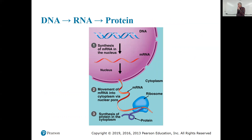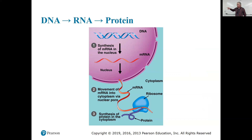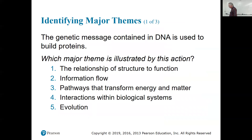This is the information superhighway in a cell: DNA to RNA to protein. Synthesis of mRNA in the nucleus is called transcription. The mRNA leaves the nucleus and moves into the cytoplasm via nuclear pores. Synthesis of protein in the cytoplasm at a ribosome is called translation. The genetic message contained in DNA is used to build proteins — this illustrates the major theme of information flow.